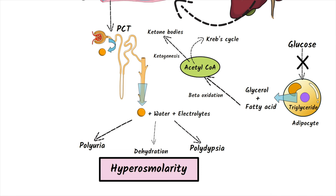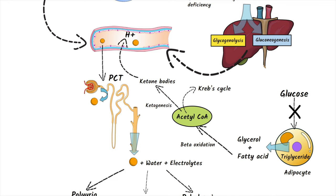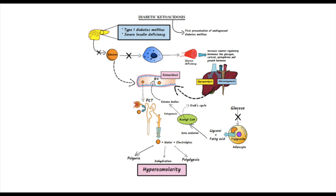These ketone bodies get into the blood circulation and they have the ability to release protons. When they release protons, it makes the blood more acidic and causes acidosis. As this acidosis is caused by ketone bodies, it is called ketoacidosis. So you should remember at least three things in diabetic ketoacidosis: it can cause ketoacidosis, dehydration, and hyperosmolarity.